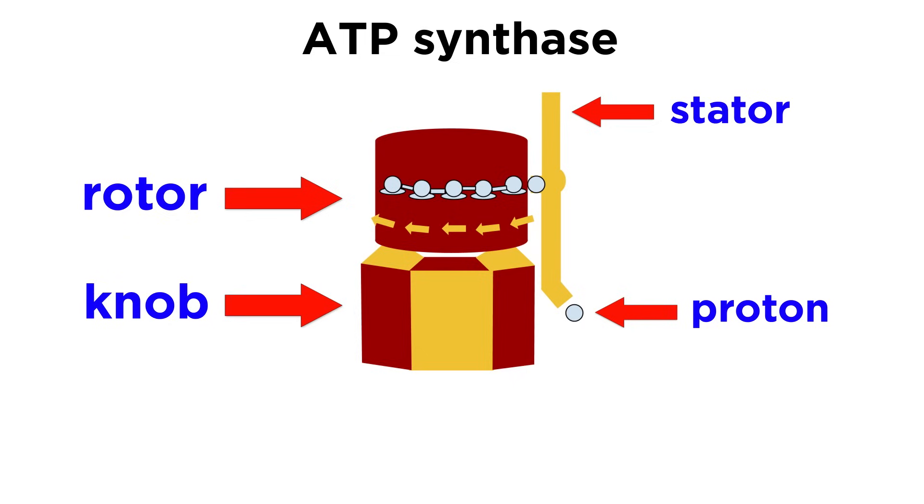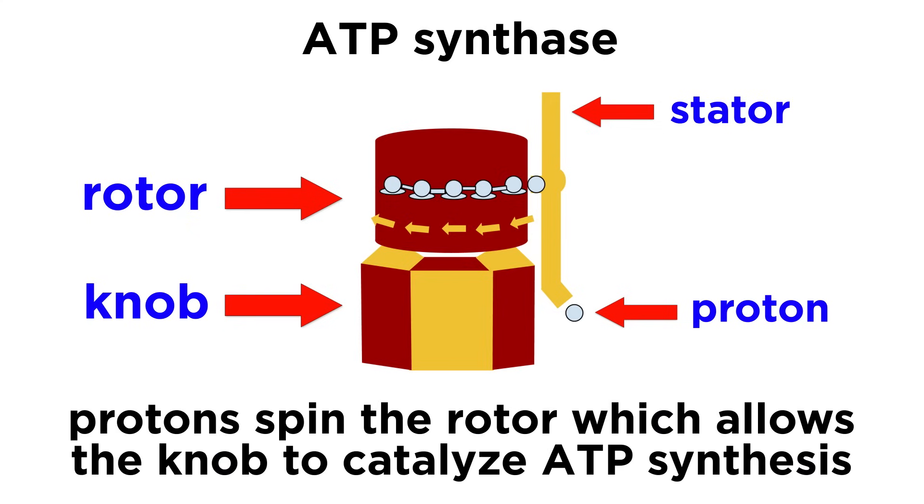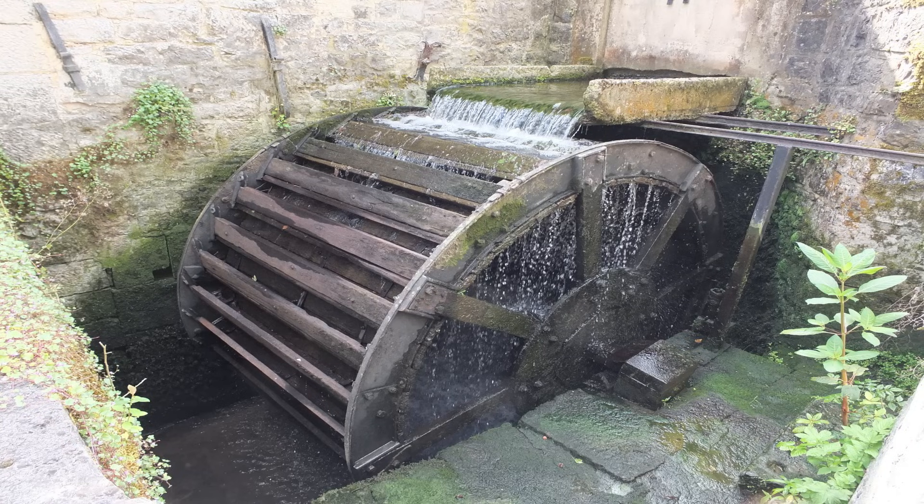ATP synthase has a fascinating structure with a component that looks startlingly like a rotor, where individual protons can bind and cause it to spin in such a way that catalyzes phosphorylation of ADP, kind of like a stream of water turning a water wheel, which can then power some other process.